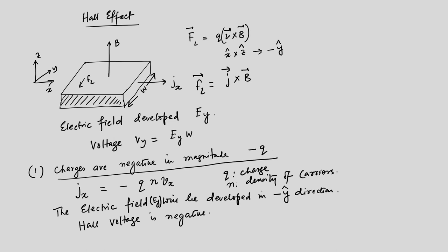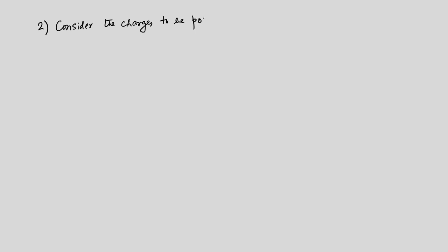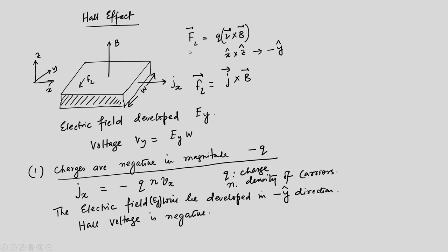This gives a negative Hall voltage. Now consider case two: the charges are positive, which means they are +q, and if that happens then J_x = q·n·v_x, where v_x is flowing in the positive x-direction.